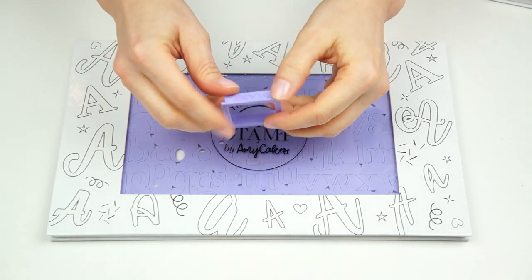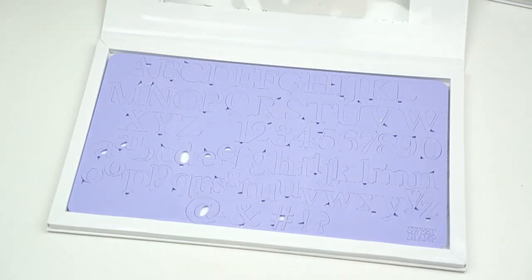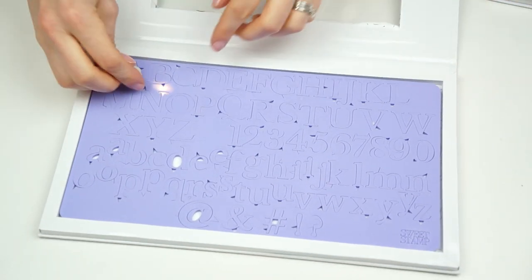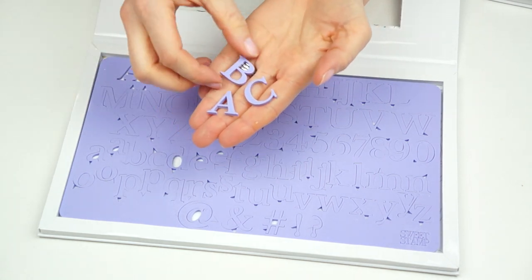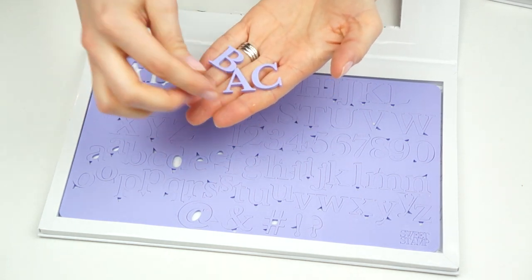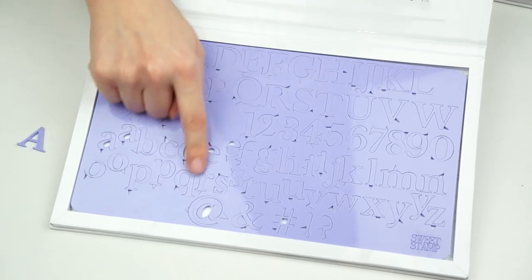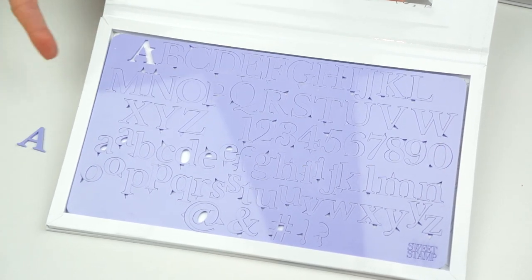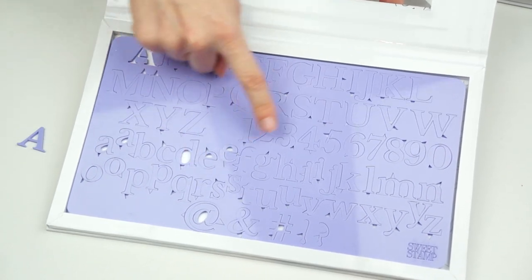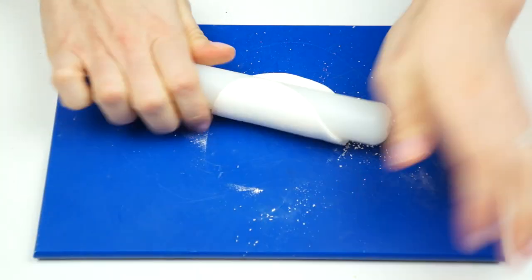For my first block I'm going to be using the Sweet Stamp letter sets and also my square cutter to create the design on the outside. Now this is the Classic Letter Set and it's going to give you a really traditional looking baby block. So for this one I'm going to be using the A. With this set you do get uppercase letters, numbers, and your lowercase letters so it's perfect for adding onto your baby blocks.